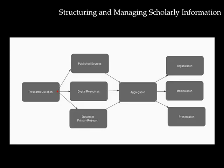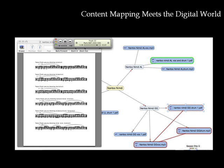VIEW takes concept mapping one step further. Designed with higher education in mind, the functionality that differentiates VIEW from other tools is drawn from an understanding of the importance of digital information and published works to scholarly activity, and the many associated tasks of structuring and managing that digital content. When concept maps and the ideas they represent are connected to digital resources, concept maps also become content maps. VIEW provides users with a visual environment for structuring, presenting, and sharing digital information. VIEW can be described as content mapping meets the digital world.